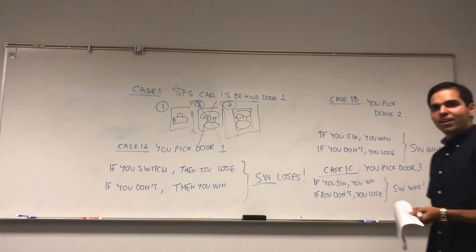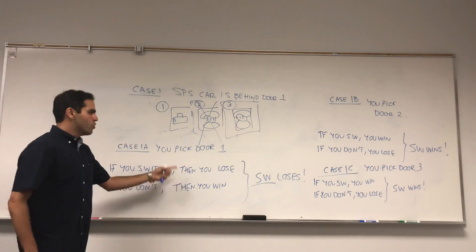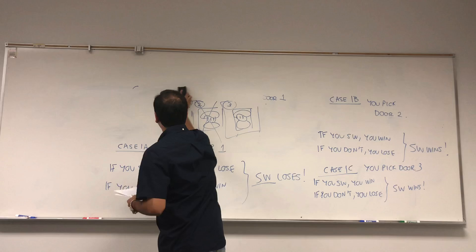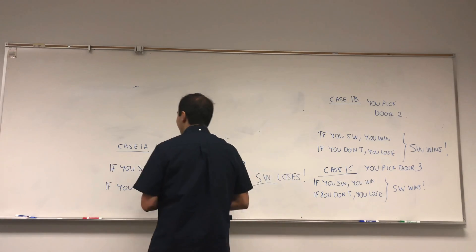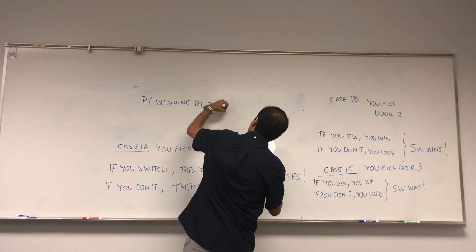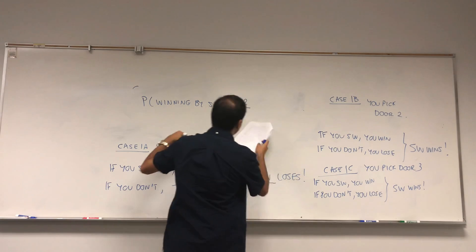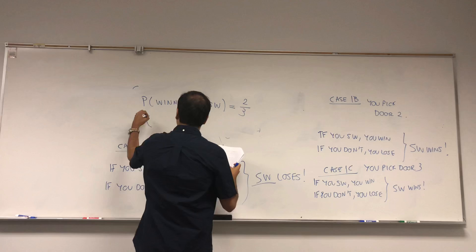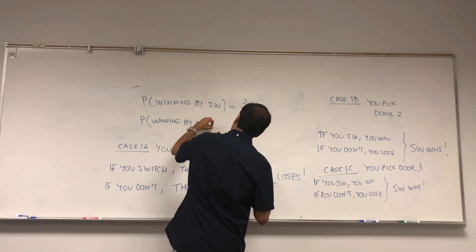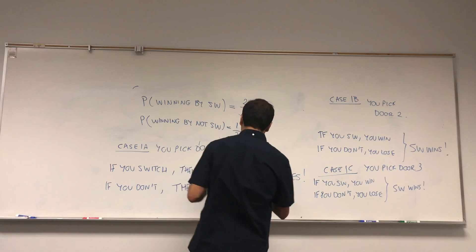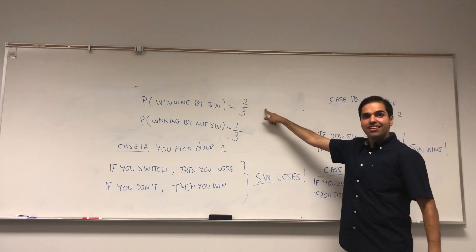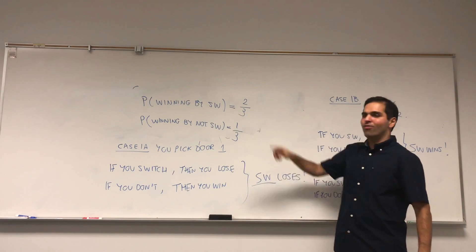All right, now, just to summarize, we have three cases here. One, where switching loses, and two, where switching wins. So in the end, well, because for two cases out of three, switching wins, the probability of winning by switching is two-thirds. So that's cases B and C. So similarly, the probability of losing by switching or winning by not switching is one-third. So in fact, as what I said, if you actually switch doors, it doubles your chances. It increases your winning probability from one-third to two-thirds.